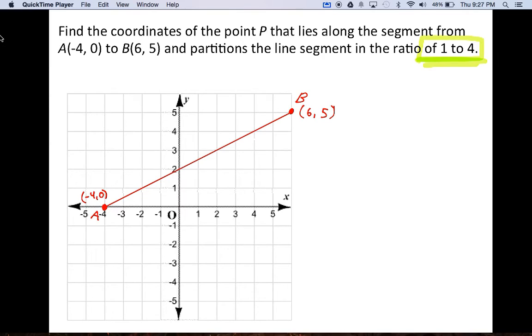So let's talk about this. A ratio of 1 to 4, that means we want something along this line so that if we divided it up equally, we'd have one part here and four parts here. Okay, that's what it means.